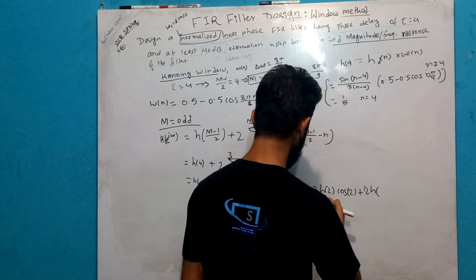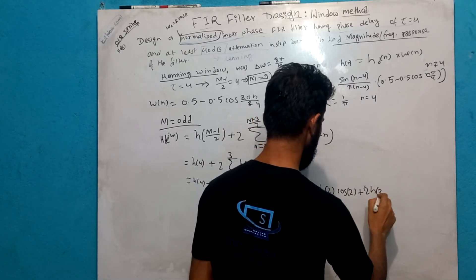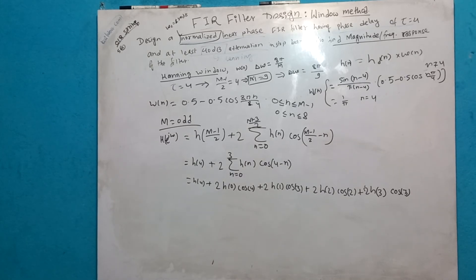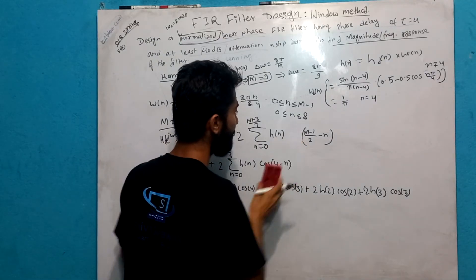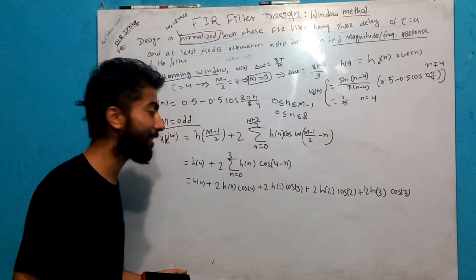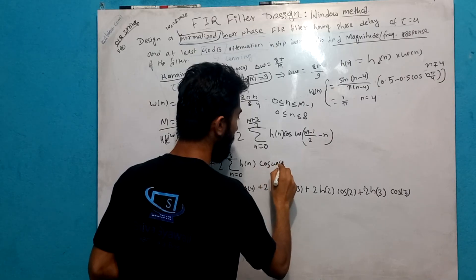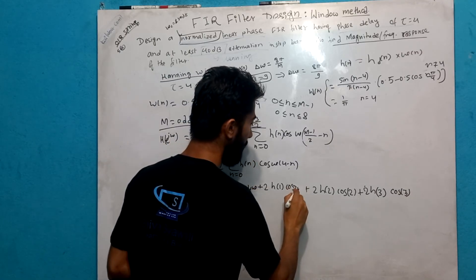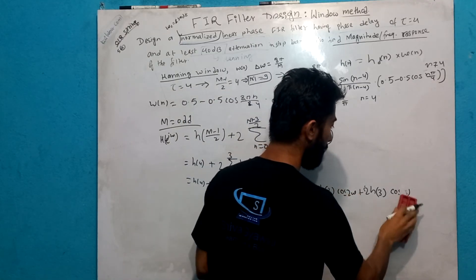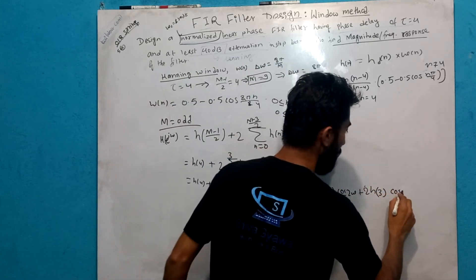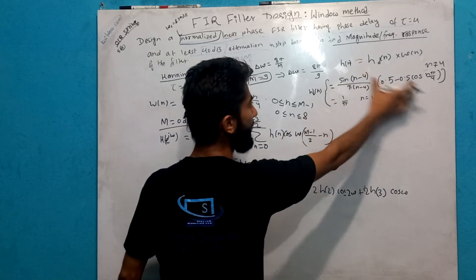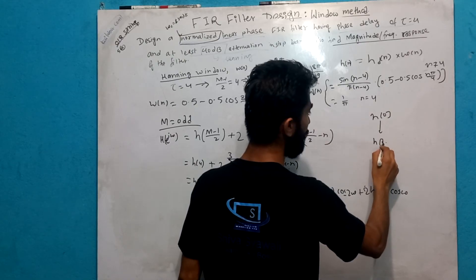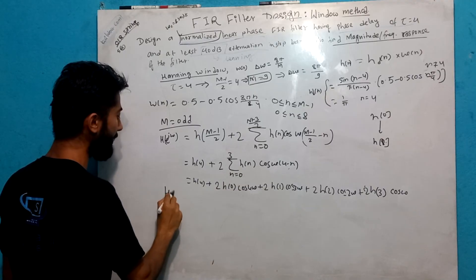Okay, I made the same mistake in the formula. It is cos omega times 4 minus n. So h of 4 plus 2 h of 0 cos 4 omega plus 2 h of 1 cos 3 omega plus 2 h of 2 cos 2 omega plus 2 h of 3 cos omega. This value of h of n is like this. Now we will use this to find the value of H of e to the power j omega.